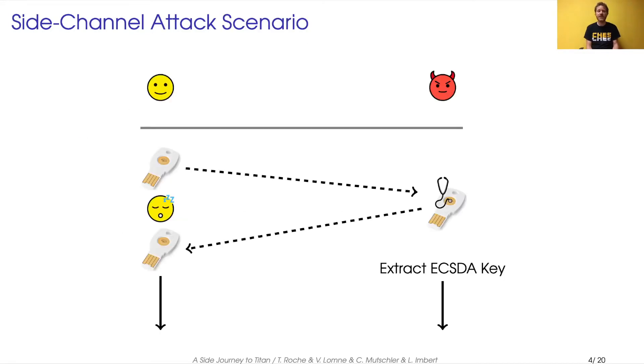Side-channel attack scenario on the Google Titan Security Key is for the adversary to steal the device, to have physical access to it, and record side-channel measurement of ECDSA signatures for a given remote account, and then it gives it back to the user without him notifying.